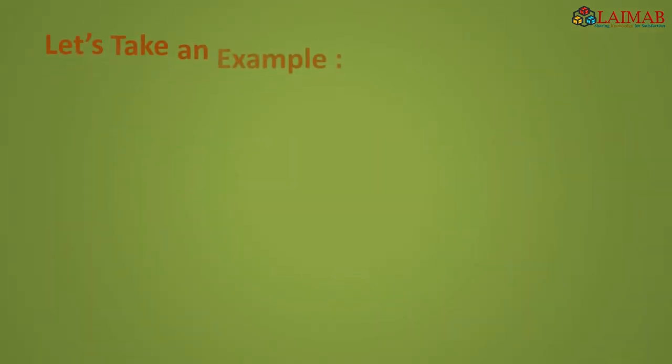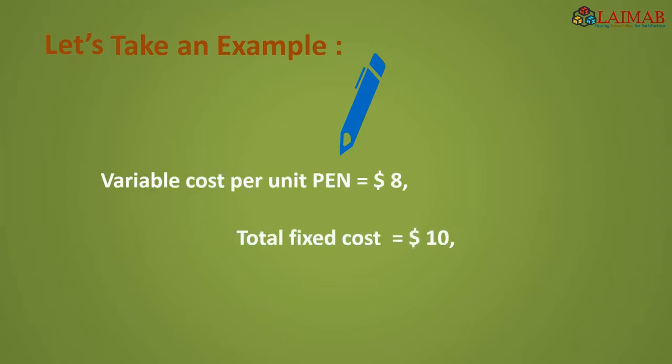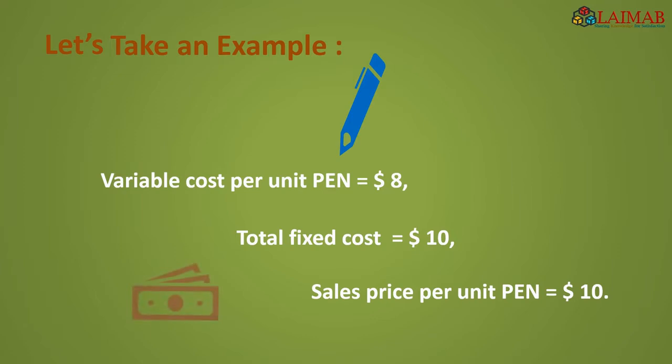To understand the concept, let's make an example. A manufacturing company produces pens. Its variable cost per unit is $8, total fixed cost is $10, and sales price per unit is $10. Here, a minimum amount of fixed cost has been taken to make this case study easy.